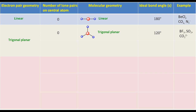If the electron pair geometry is trigonal planar and the number of lone pairs on the central atom is one, then to find out the molecular geometry, you just ignore the lone pair. This will result in a molecular geometry which is called bent, angular, or V-shaped. The ideal bond angle will be 120 degrees. O3, SO2, and NO2- are examples of this type of molecule.